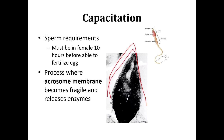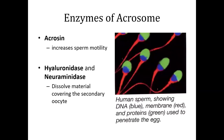The structure that once was hardened to stop it from being destroyed has to become fragile, release some enzymes, and then merge with the egg. There are a couple of key enzymes: acrosin, which increases sperm motility, and hyaluronidase and neuraminidase, which dissolve material covering the secondary oocyte, essentially allowing the sperm to fuse with it.